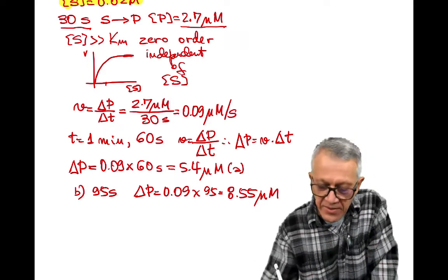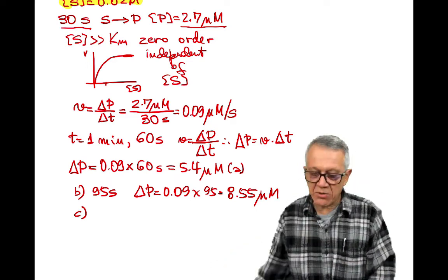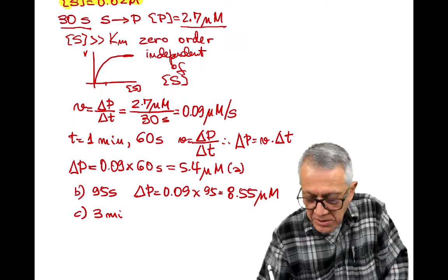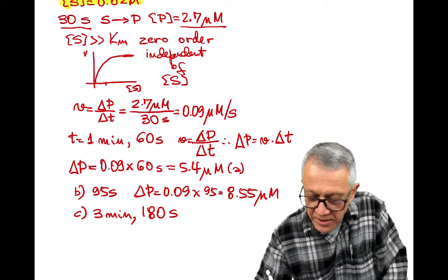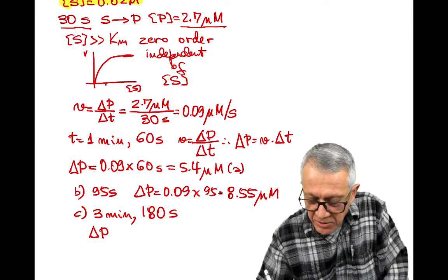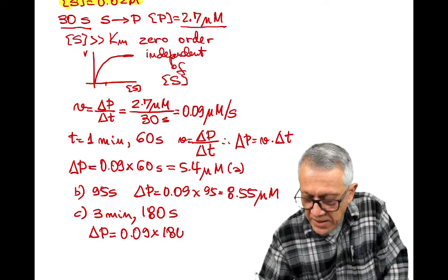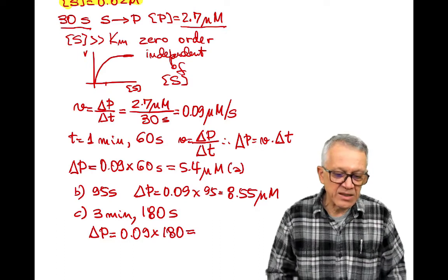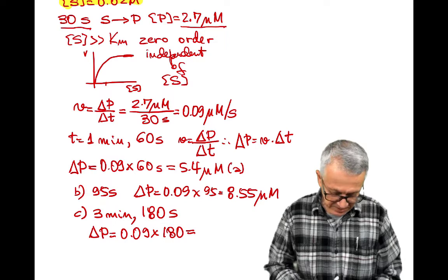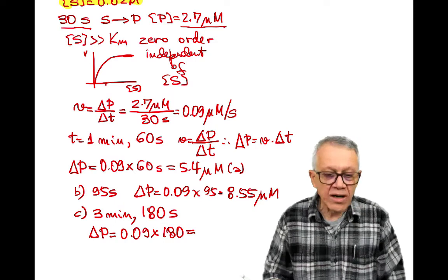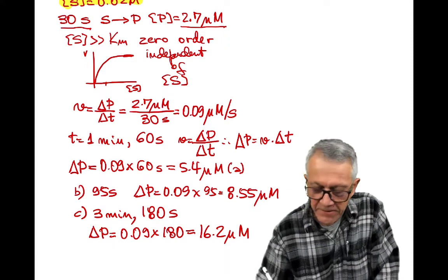With C we have the same type of thing with three minutes. Three minutes might be better to have that in 180 seconds to avoid any problem. Delta P is going to be 0.09 times 180. This is 16.2 micromolar.